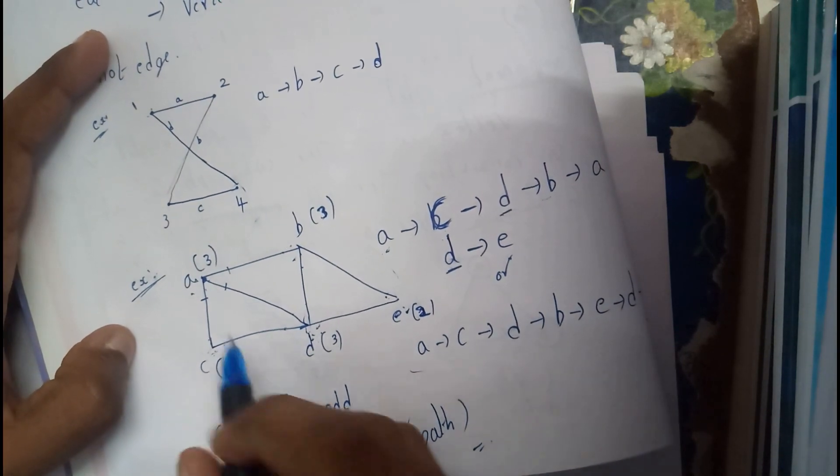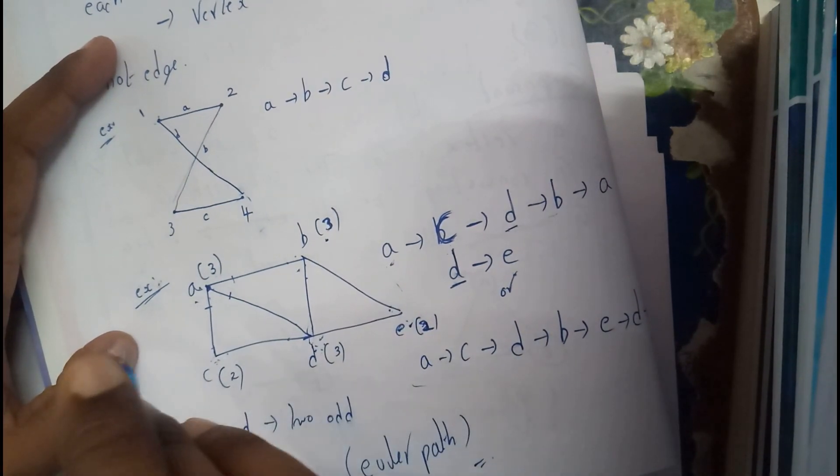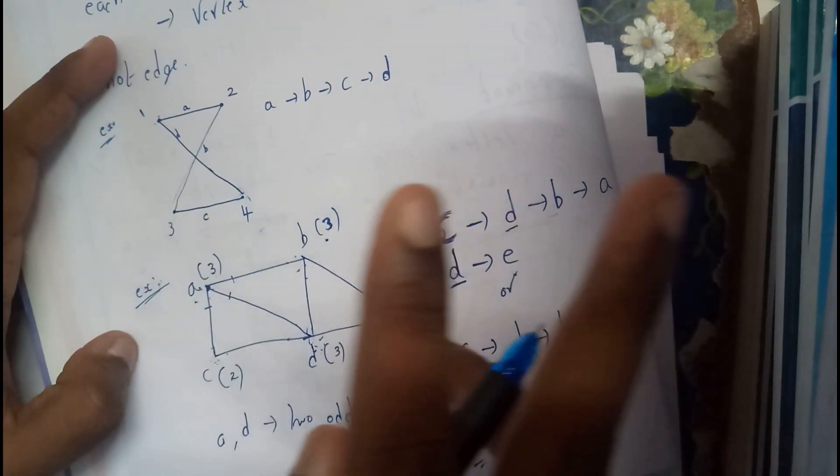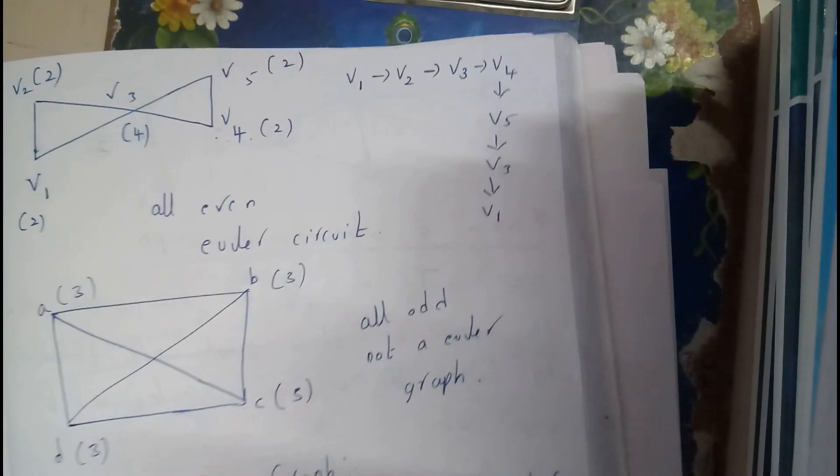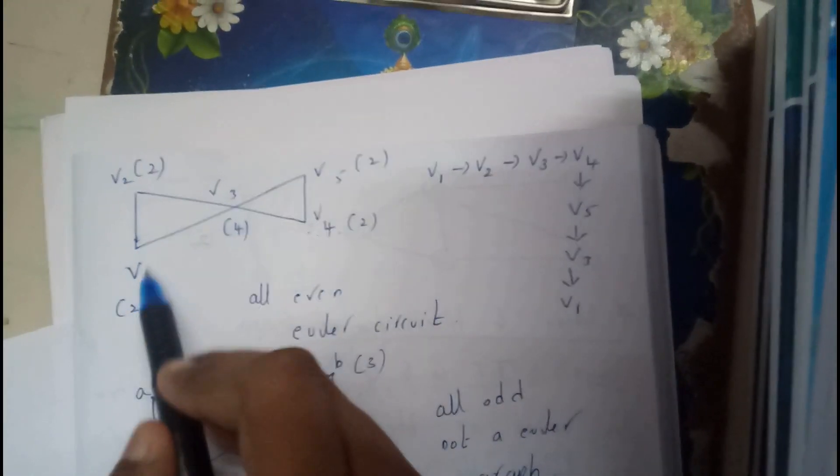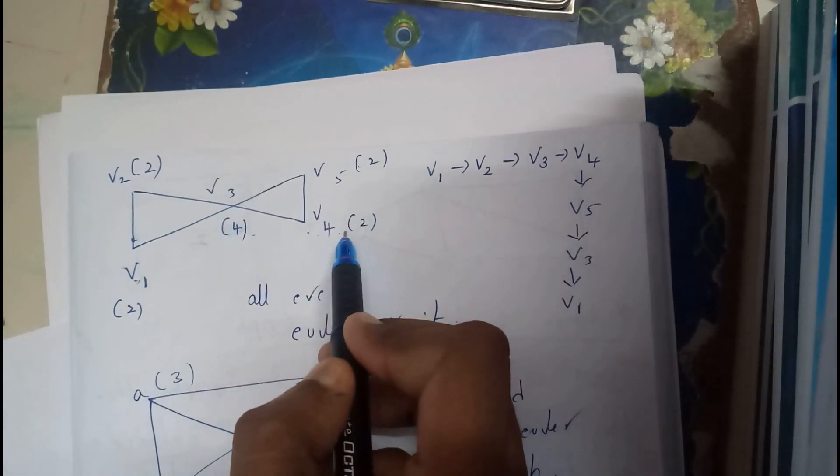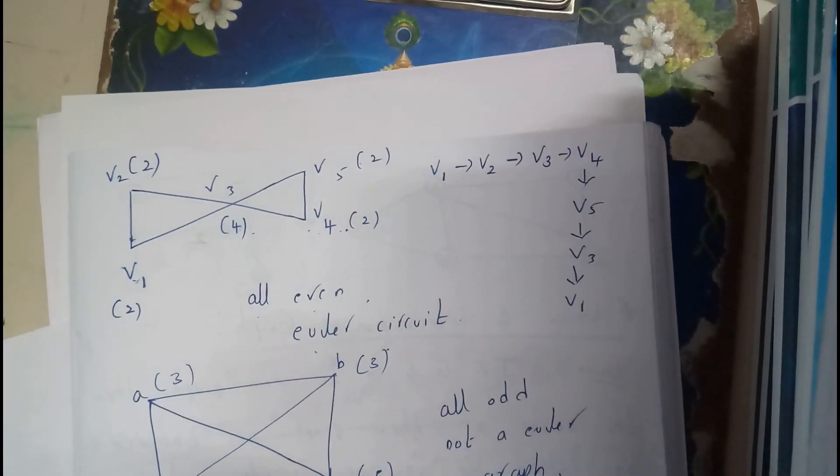So here we are having more than two odd numbers, more than two odd numbers. So this is an Euler path. Whenever we are having another case, in this case we are having all are even, so if all are even then it is an Euler circuit. I hope everyone understood what is how I am finding them.